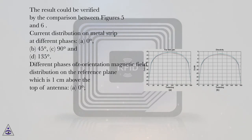The result could be verified by the comparison between Figures 5 and 6. Current distribution on metal strip at different phases: A, 0 degrees; B, 45 degrees; C, 90 degrees; and D, 135 degrees.